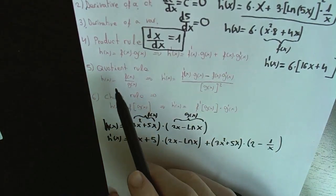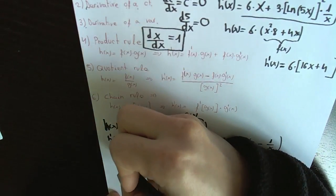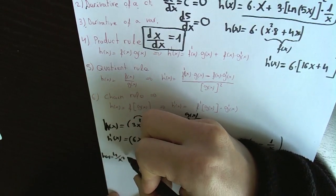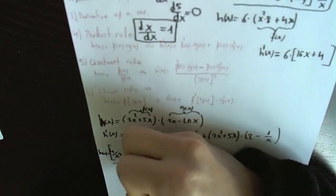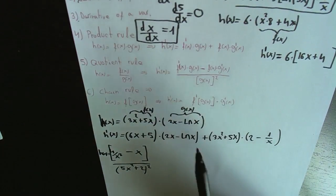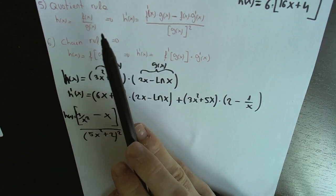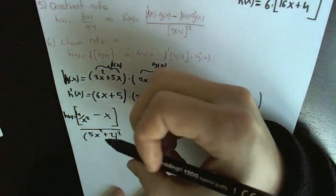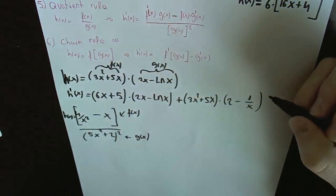Now the fifth rule: the quotient rule. If we have this function h(x) equal to 4 divided by x cubed minus x, all divided by 5x squared plus 2, all squared, we apply the quotient rule. We identify f(x) as the numerator function and g(x) as the denominator function.